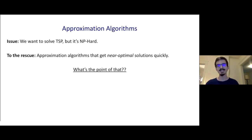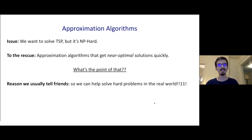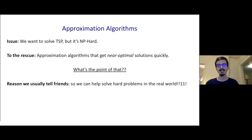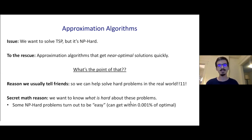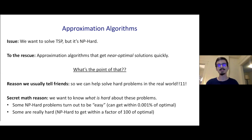You might ask what's the point of this. There are two answers. The one we usually tell our friends is that NP-hard problems are pretty common in the real world, so it's important to have tools that let us get decent solutions. Approximation algorithms really are used in the real world, so it's good to push the envelope. However, a lot of us in the field have a kind of secret math reason: we want to know why these problems are hard. Sometimes we can get fast algorithms within a fraction of a percent of optimal, so in the real world these problems are basically solvable. But sometimes we can't get anything even within a factor of 100 or 1000 of optimal, and we want to know what structures in the problem make it easier or harder.